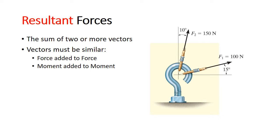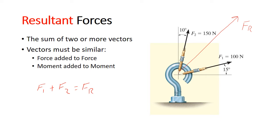In this case we have two forces F1 and F2 acting on a hook, and so if we were to add those two vectors — doing this symbolically — we have F1 plus F2 equal to our resultant force. We can see that we have a resultant force acting in this direction and we can use trigonometry to determine the actual magnitude and direction of the resultant force. But that's basically all the resultant is.